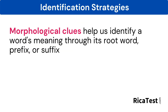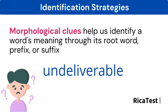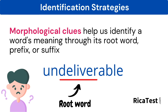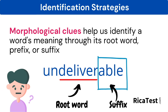Students use morphological clues to identify a word's meaning through its root plus affix or suffix. If a student came across an unfamiliar word, they could use morphological clues to figure out its meaning. First, the student would look at the root, which is deliver. The student probably knows what deliver means. Next, the student looks at the suffix, which is able, meaning can, or to have the ability to do something.